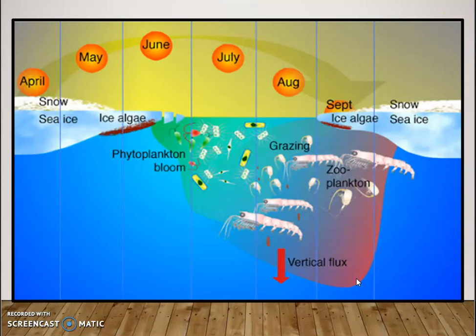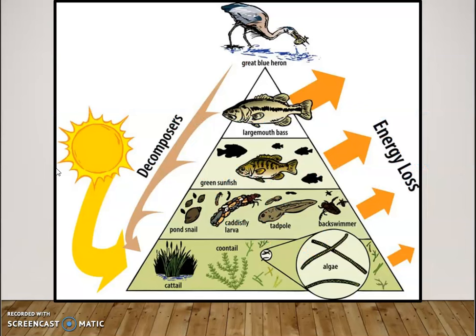In ocean ecosystems, we also have phytoplankton and algae that are able to do photosynthesis. So it doesn't have to be a plant like a tree or a flower — it can also be other types of organisms. Here I like this picture because it shows plants as producers, but you also have algae that can be a producer, doing photosynthesis and producing its own food.